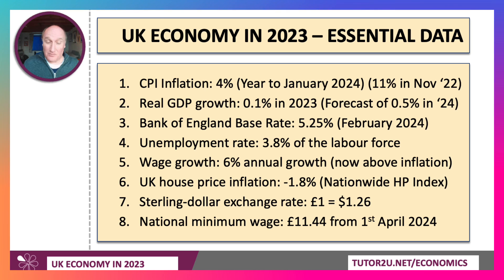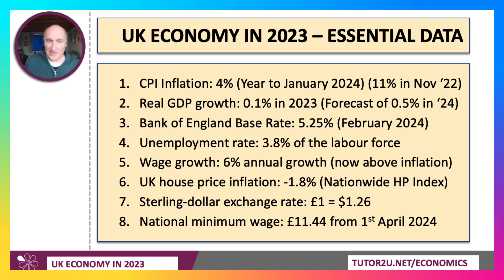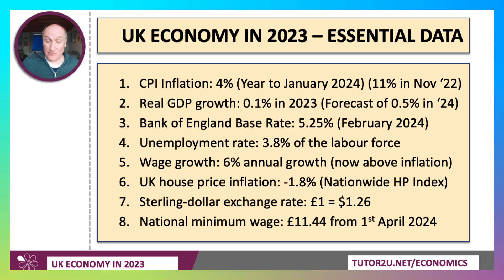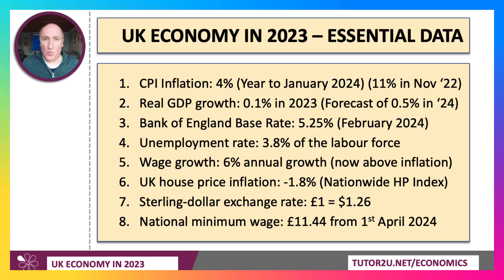Taking it all together: inflation has come down to 4%, from 11% at the end of 2022. But the economy is flat — GDP growth was 0.1% last year, and the IMF is forecasting only 0.5% growth this year. Only Germany will grow slower amongst the leading economies. The base rate is 5.25% and the question is when it will start to fall. Unemployment remains low at 3.8%, and wages are rising at about 6%. House prices fell last year by just 2% according to the Nationwide price index, though more significant falls may follow given more expensive mortgages. Sterling/dollar is quite stable at around $1.26. And a big piece of economic news for the exam: the minimum wage is going up to £11.44 — more than a £1 increase from the 1st of April 2024.